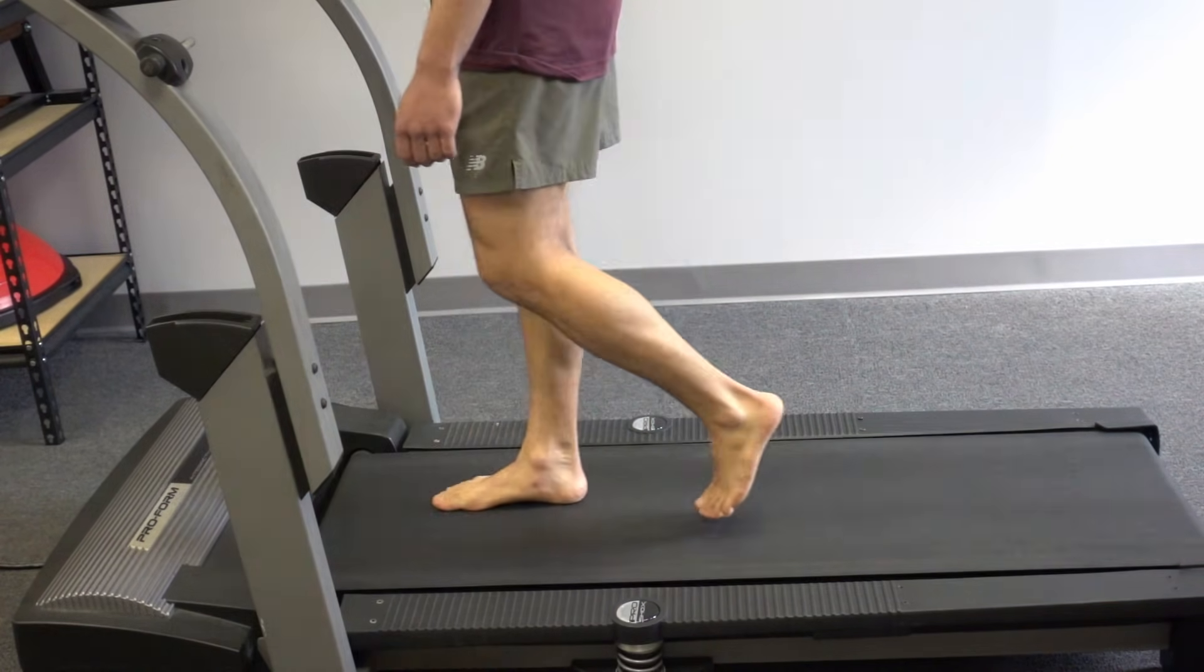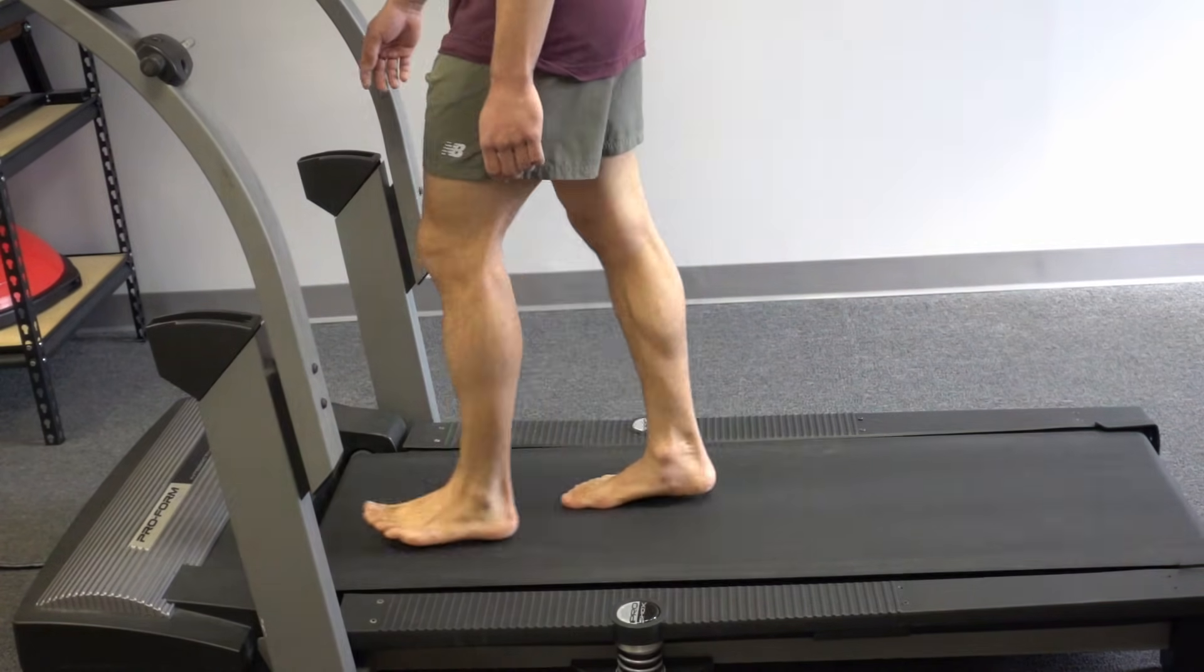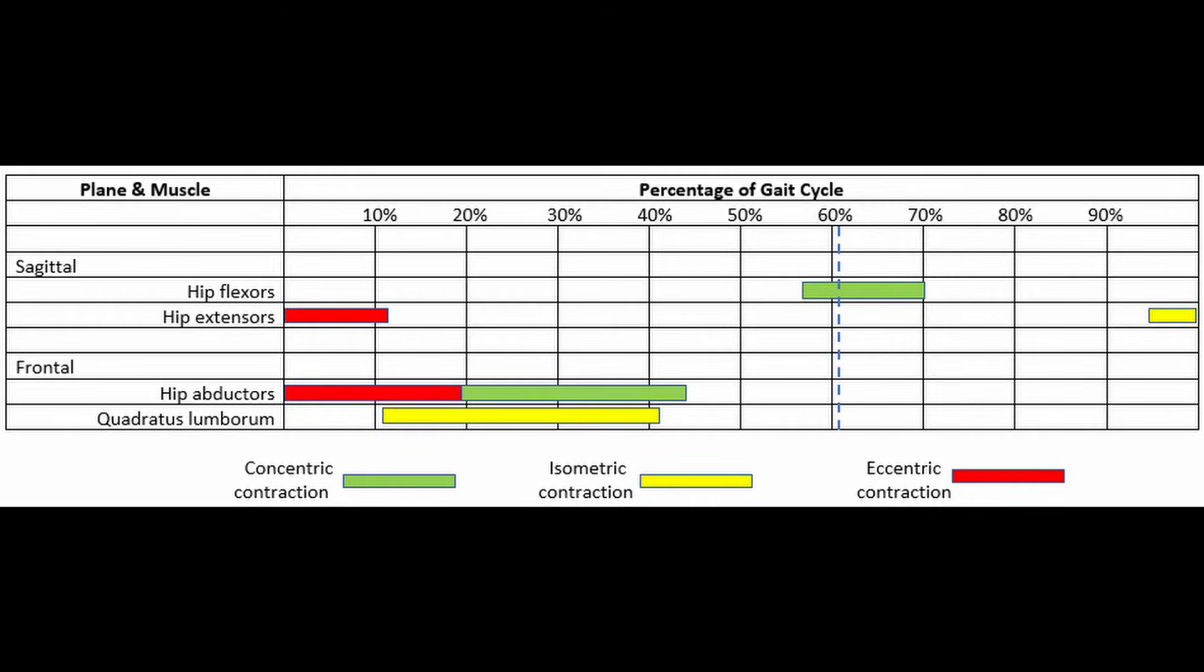Our last stop in the kinetic chain is the hip and pelvis. Let's take a look at our sagittal plane muscles first. Just like the ankle and knee, the hip muscles must respond to the ground reaction force being transmitted back through the leg.